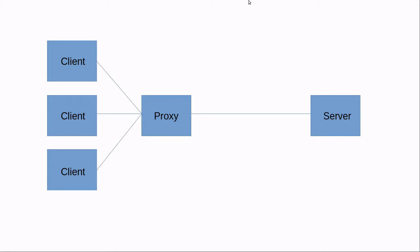A proxy server stands between clients and servers and routes the traffic between them. Probably the prime reason to use a proxy server is caching. If one of the clients downloads data, it may be cached on the proxy server, and when another client needs this data, instead of downloading it from the internet, it downloads it from the proxy and saves lots of bandwidth. Proxy servers are also useful for malware scanning, access control and more.